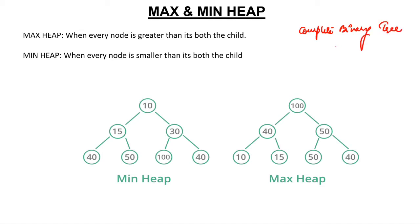A complete binary tree is a tree filled in a specific order. The first node comes here, then second to the left, then right, then we start filling the second level's left child first, then right, and continuing in that order level by level.